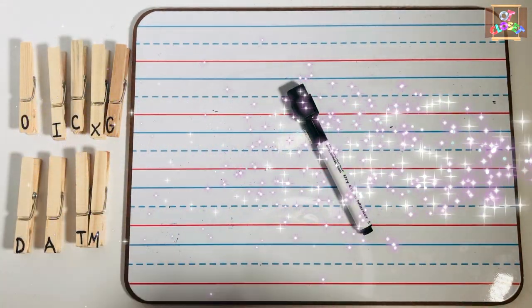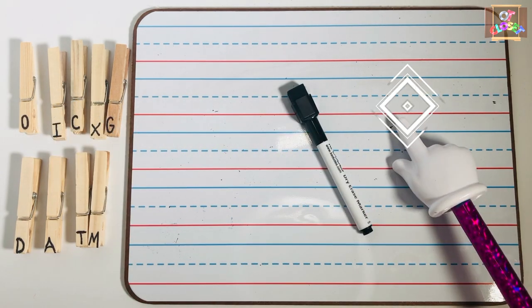For activity number three you need clothespins with letters, paper, and marker.